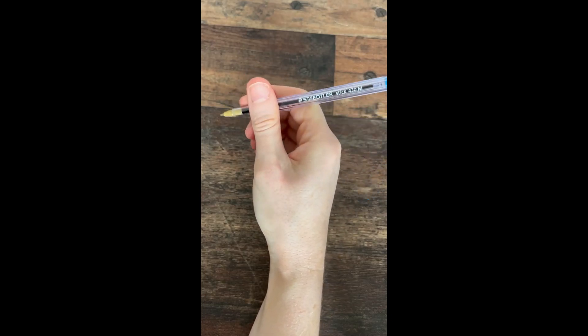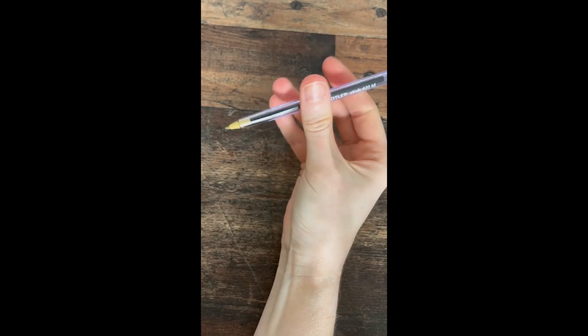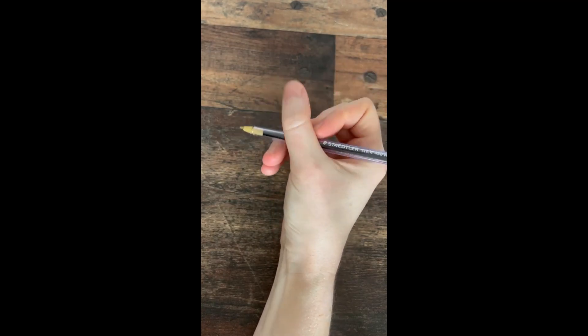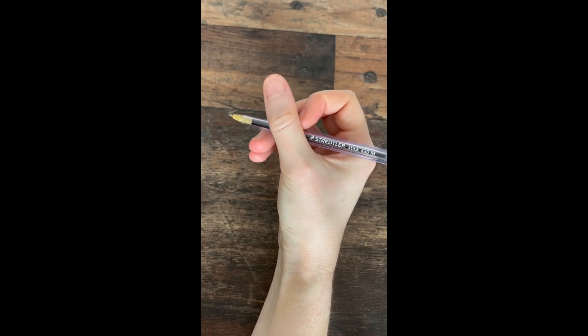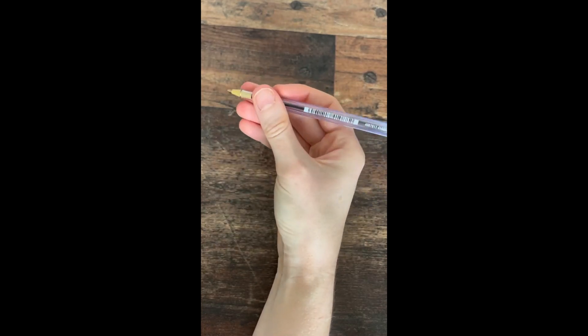For children who find handwriting challenging, they may use a whole hand grasp, a fingertip grasp or they may wrap their thumb around for stability. Some children will put too much pressure through a pencil or too little and they may do this for a variety of reasons.